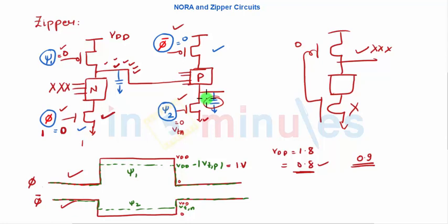The only change is the change in the clock and we ensure that when in the evaluation phase, if the evaluation inputs are such that my output needs to stay to its pre-charge value, my transistors of pre-charge or pre-discharge are still kept partially on so that my output value is not lost. Hope you have followed NORA and zipper circuits. Stay tuned for further clips and thank you very much.